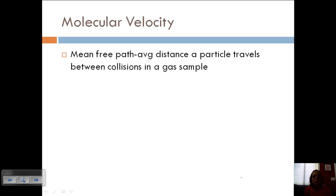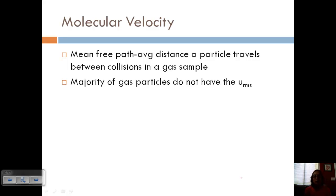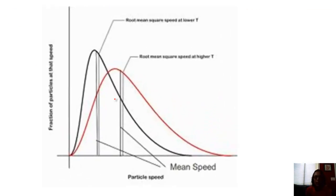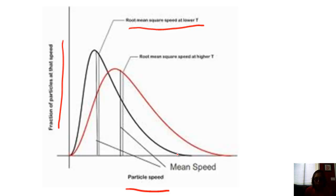Let's talk a little more about velocity. The mean free path is the average distance a particle travels between collisions — it collides, shoots off, travels a bit, then collides again. Even though we calculated the root mean square velocity as an average, the majority of gas particles don't actually have this average velocity, because of all the collisions going on and varying travel distances. As temperature increases, the average velocity and the spread of velocities will also increase. Looking at the graph, we have particle speed versus fraction of particles at that speed, with one line for root mean square speed and another for the mean speed — they don't exactly line up, and there's a wider distribution of speeds as well.